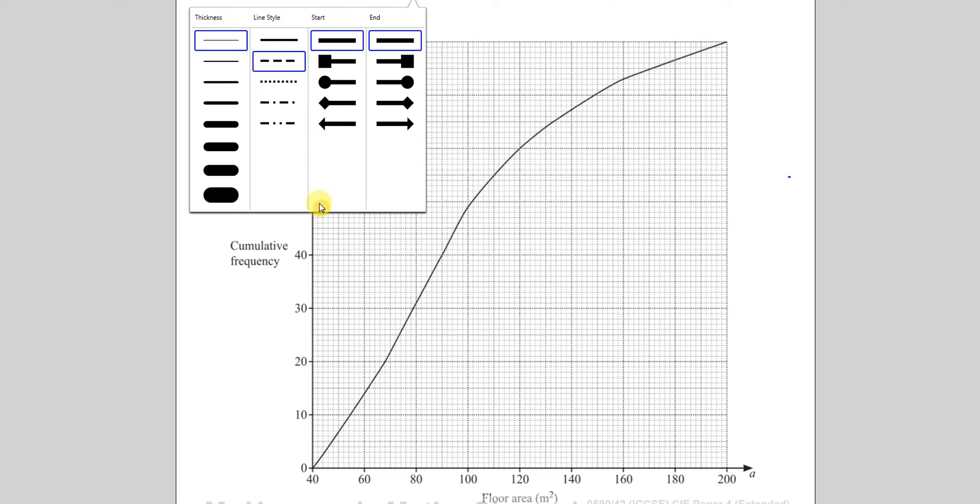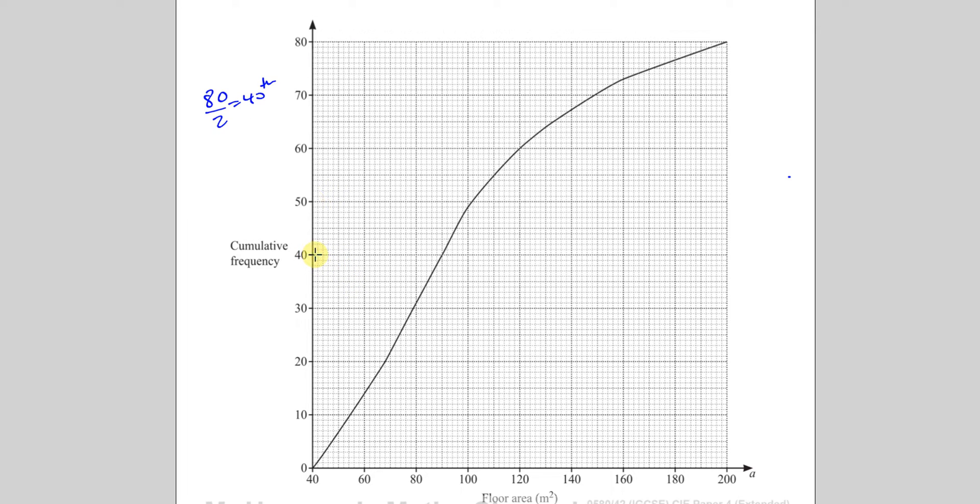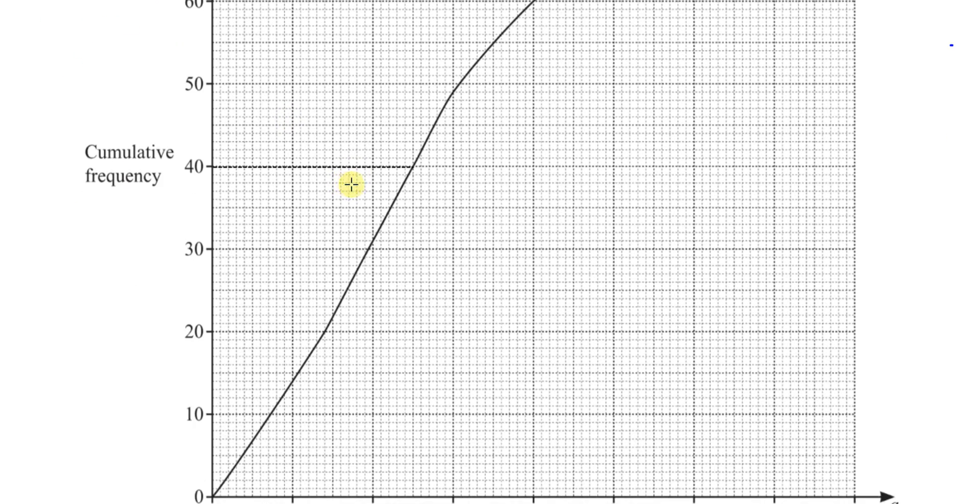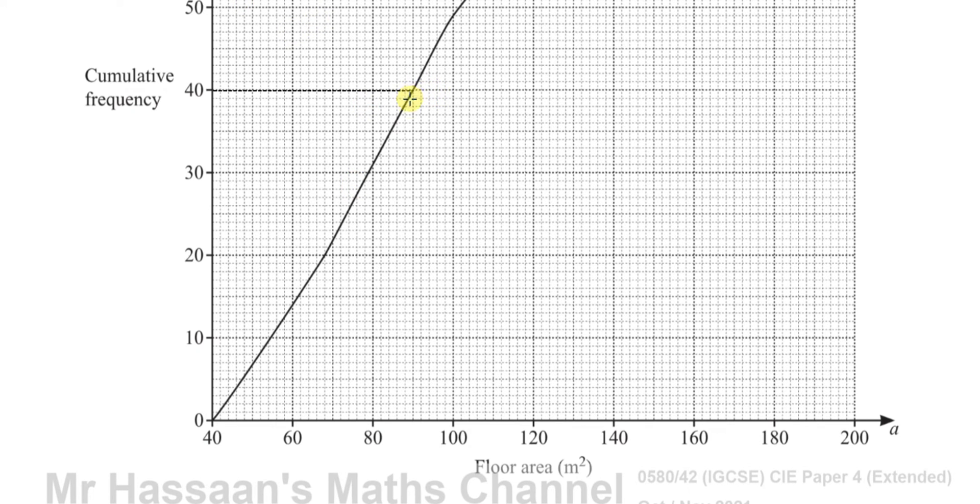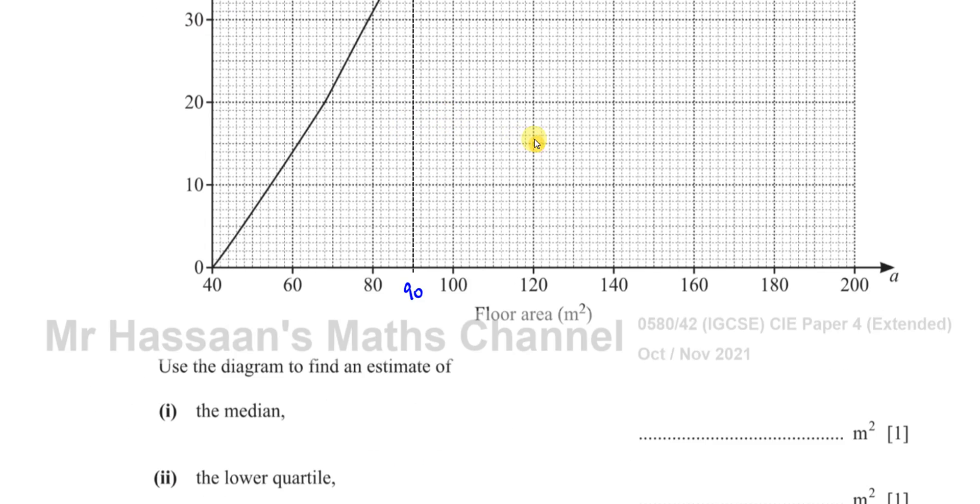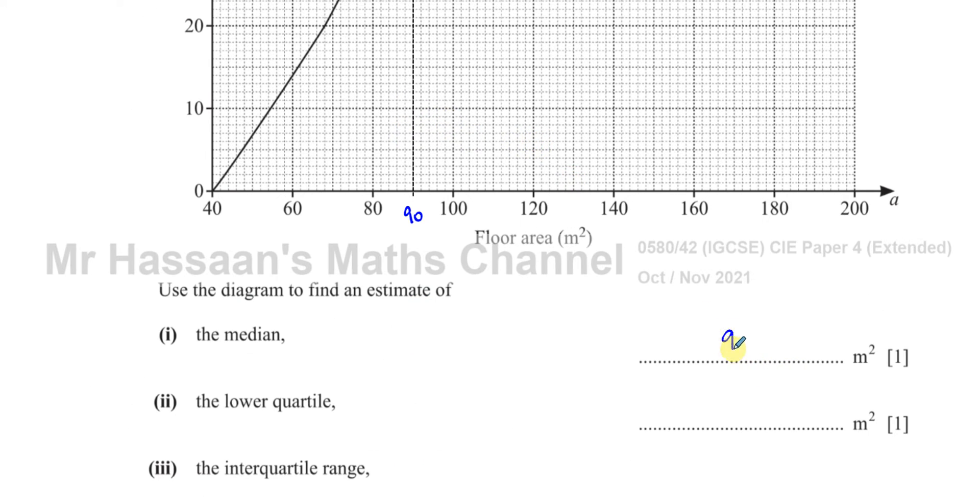Now we have to look to see what it is. We go to the cumulative frequency curve, and we draw a line from 40 along until it hits the curve. I'll just zoom in a bit so I can see this more clearly. You can see it's exactly 90. It seems exactly to be 90 here, if you draw that properly. So the floor area of the house in the middle of all the data, in order of size, is 90 meters squared. The median value is 90 meters squared.